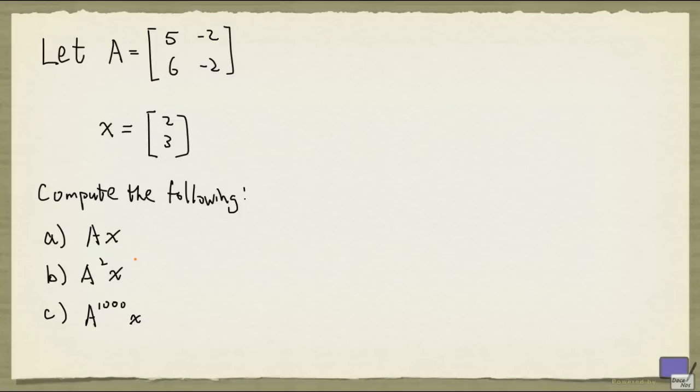If you look at part A and part B of this question, they are quite straightforward. You can just carry out the multiplication. But if you look at part C, do we really want to compute A to the 1000? Assuming that we're doing this by hand.